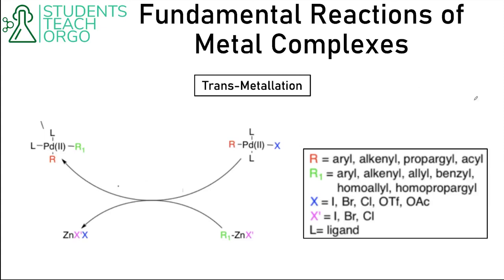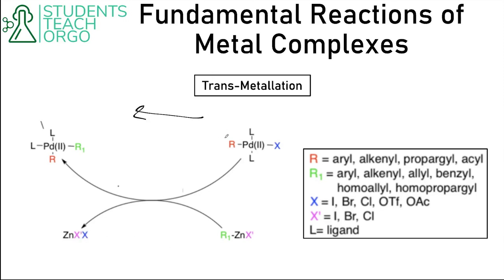Our last fundamental reaction is transmetallation. In this reaction, going from right to left, we are taking ligand X and moving it from the palladium to the zinc, and taking ligand R1 and moving it from the zinc to the palladium. Transmetallation encompasses many different kinds of reactions that move ligands from one metal to another, so we're not looking at specific changes in oxidation state, electron count, or ligand count. Just recognize that if a ligand moves from one metal to another metal, you're probably looking at transmetallation.